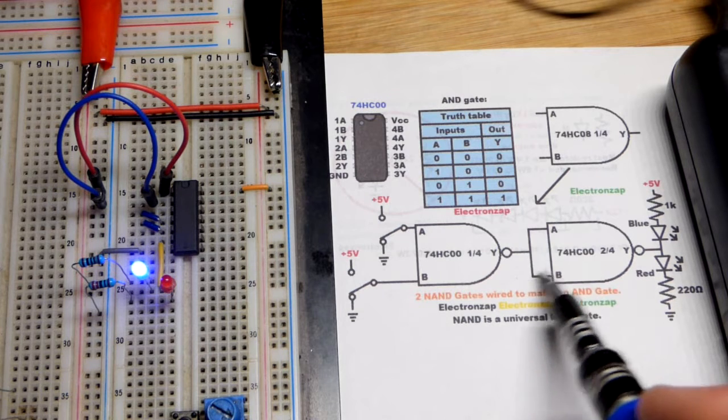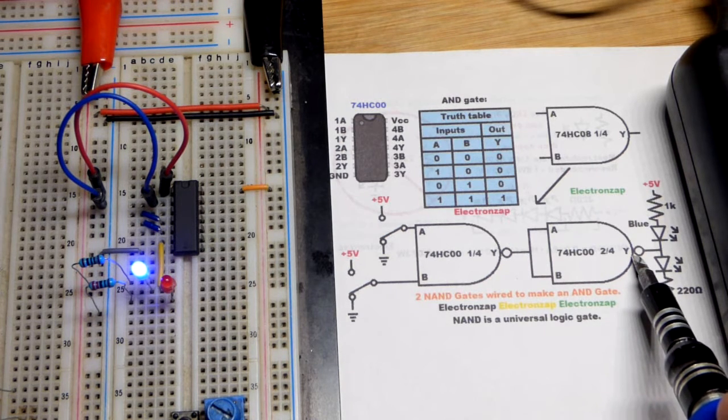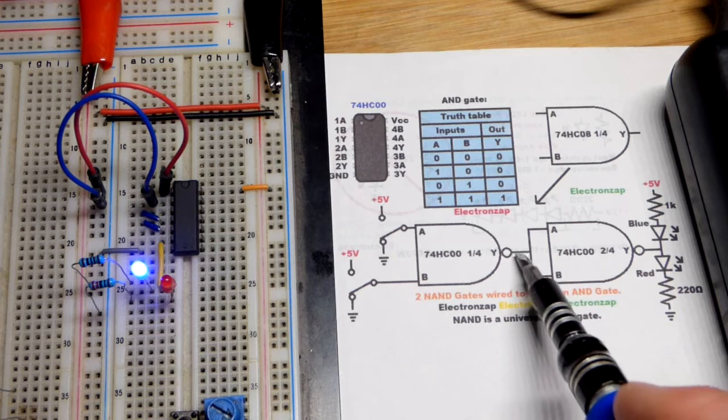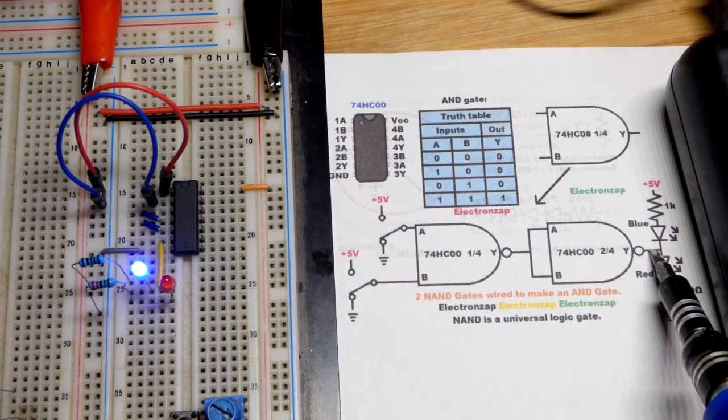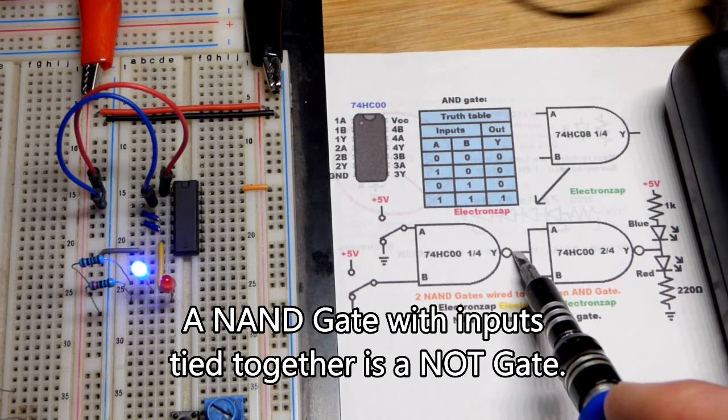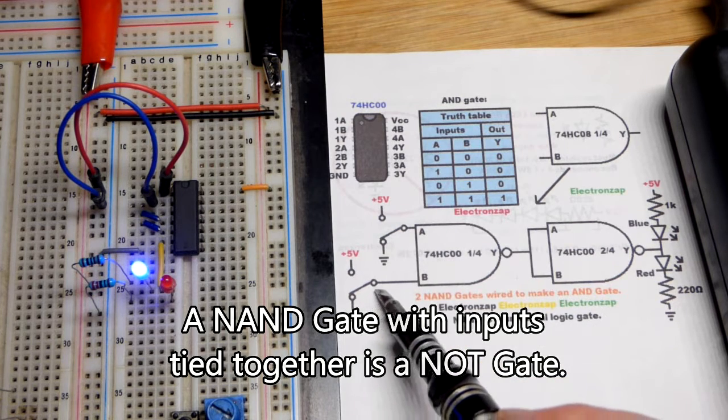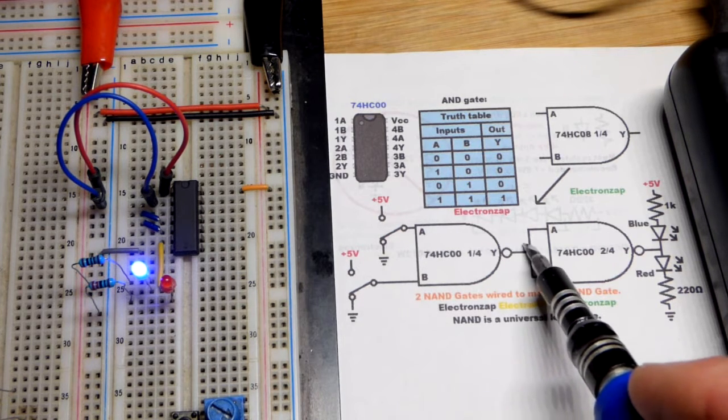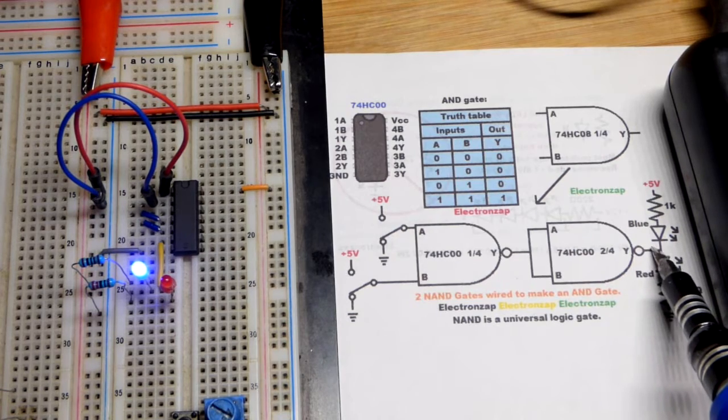So we have a NAND gate right there. Whatever we give it will be the opposite coming out, straightforward not logic gate. So when it comes to the inputs there, we're getting the opposite of what we want, but then we're inverting it. Hopefully it makes sense.